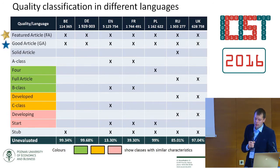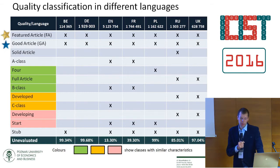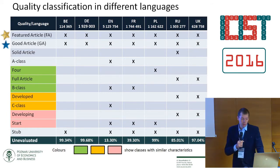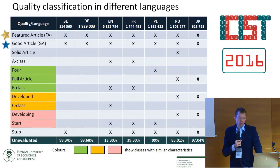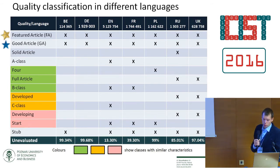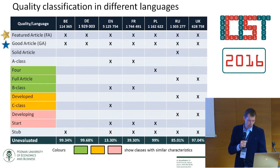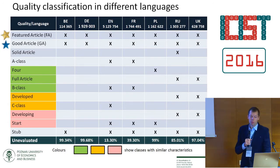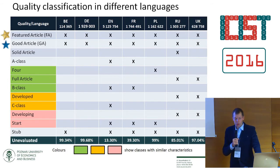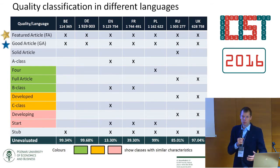Some languages use an expanded rating scale, as you can see for English and Russian, while others use only two or three awards. For example, German Wikipedia uses only two of the best awards: Featured Article and Good Article. There is also a problem with unevaluated articles. For example, in the Polish version, 99% of articles have not been assessed.